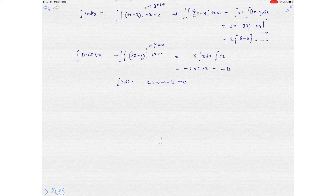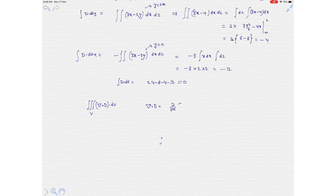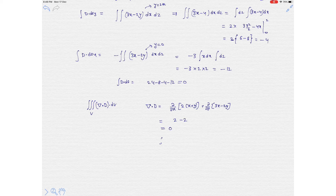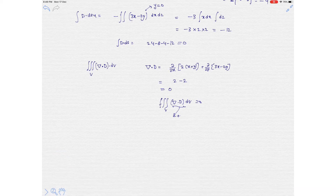Now let's compute the right-side term of the divergence theorem, which is the volume integral of ∇·D dv. First, ∇·D equals ∂/∂x of (2x+y) plus ∂/∂y of (3x−2y), which gives 2 minus 2 equals 0. Since the divergence is zero, there is no need to calculate the volume integral — it is clearly zero. Both sides of the divergence theorem equal zero and are verified.